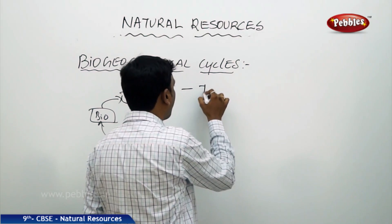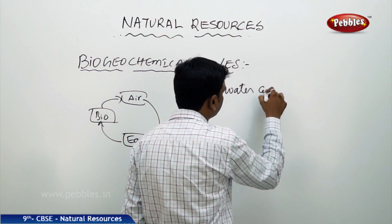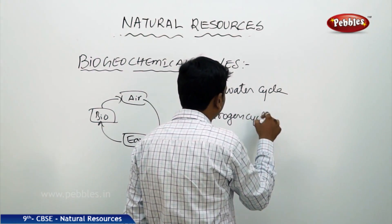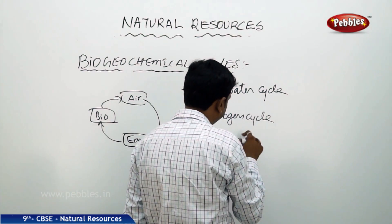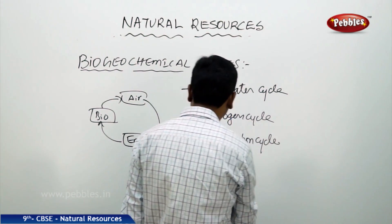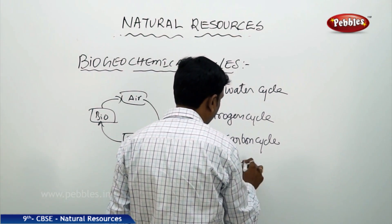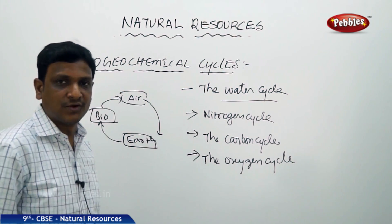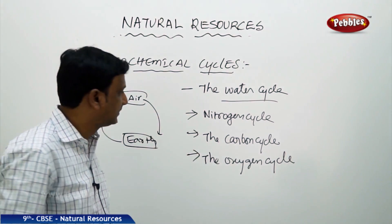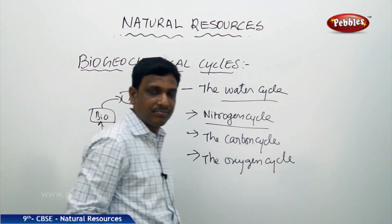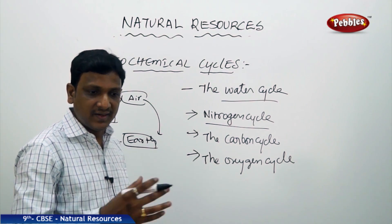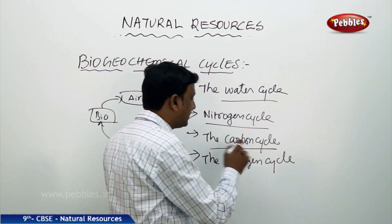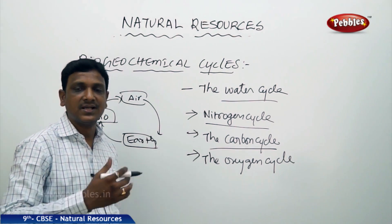So now let us see what those are. The first one is the water cycle, the nitrogen cycle, the carbon cycle, and the oxygen cycle. The water cycle tells how water and rain are formed and how water is circulated between the atmosphere and the earth. The nitrogen cycle tells how nitrogen reaches the soil as nutrients to plants and how nitrogen comes to living forms. The carbon cycle tells the cycling of carbon, and the oxygen cycle explains the cycling of oxygen.